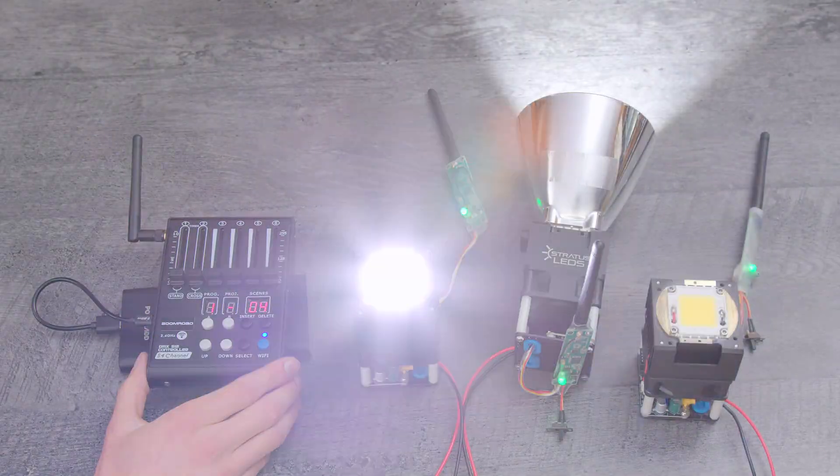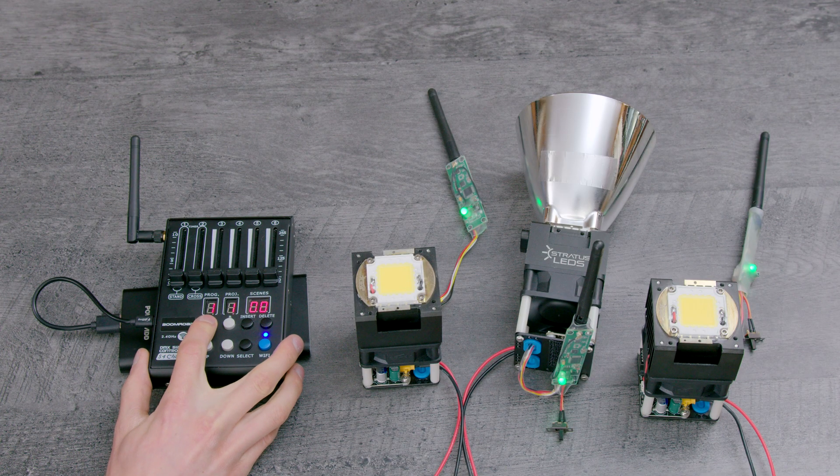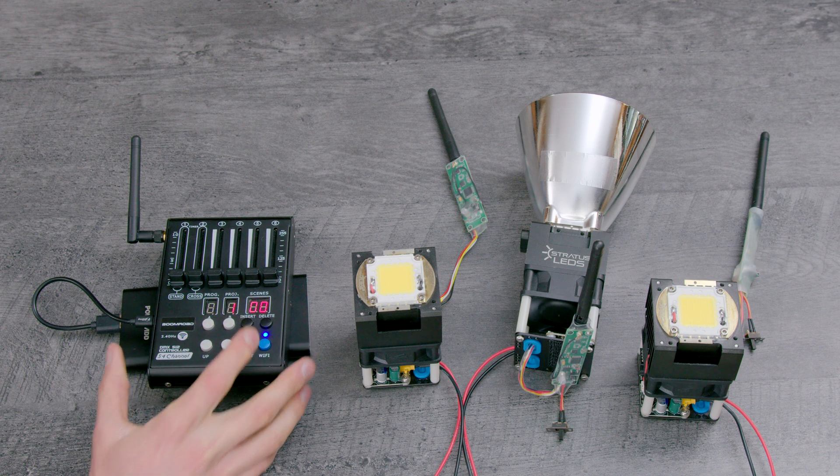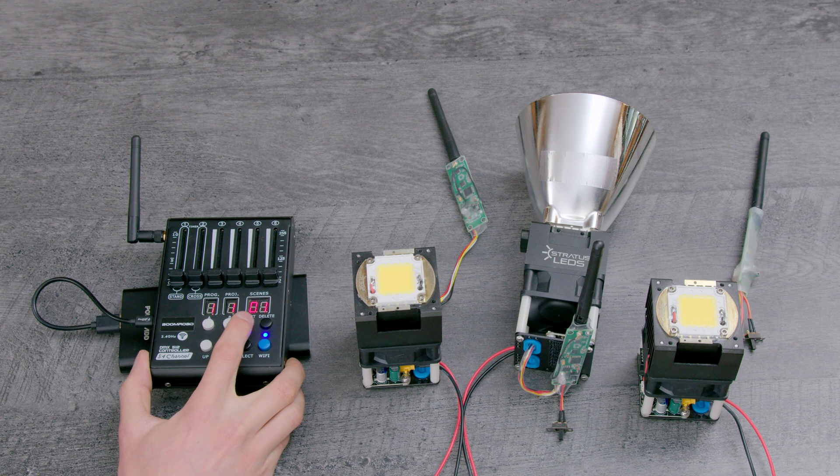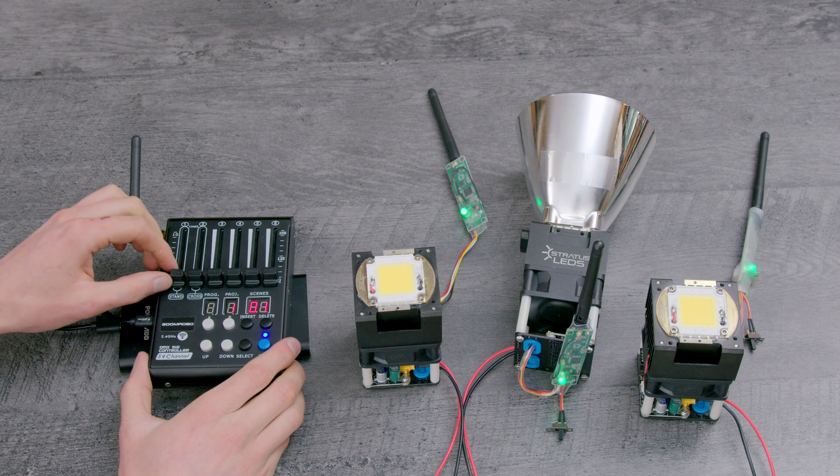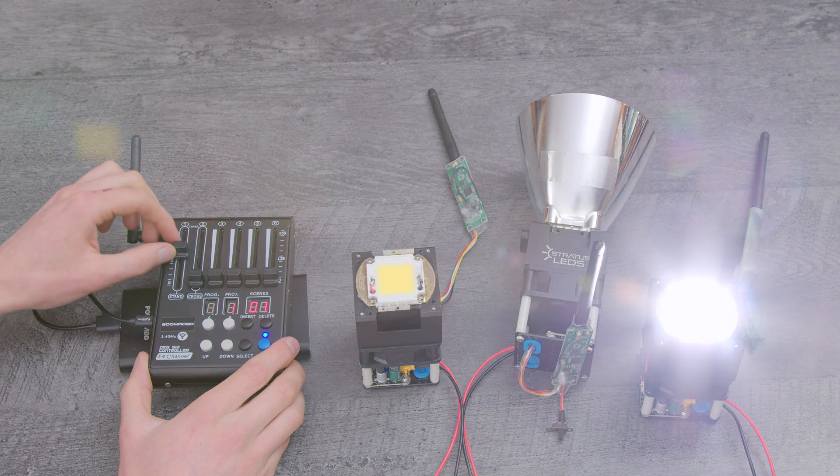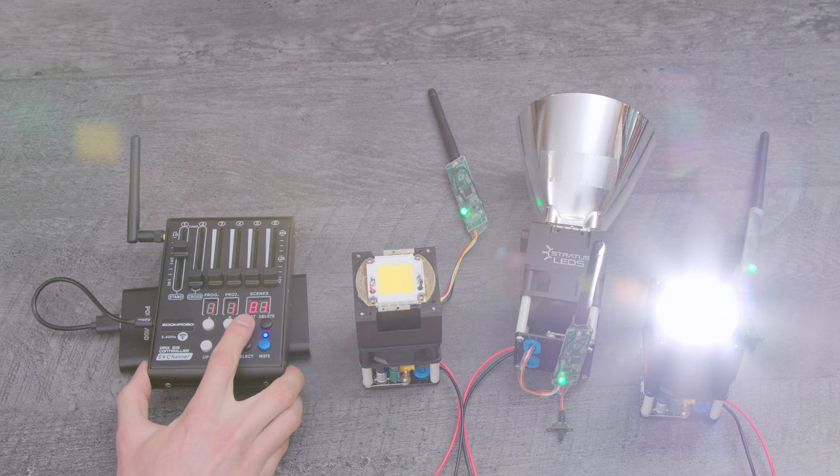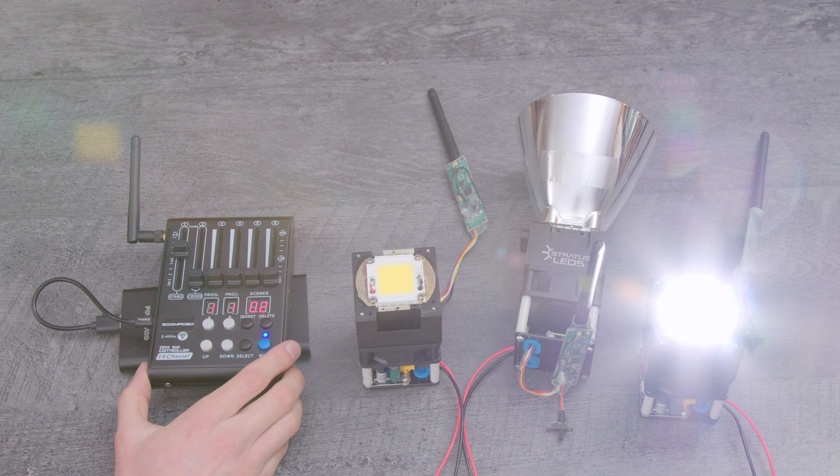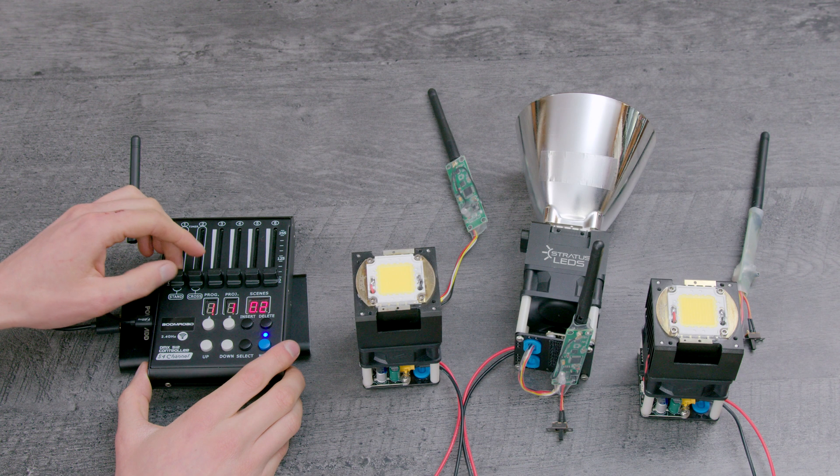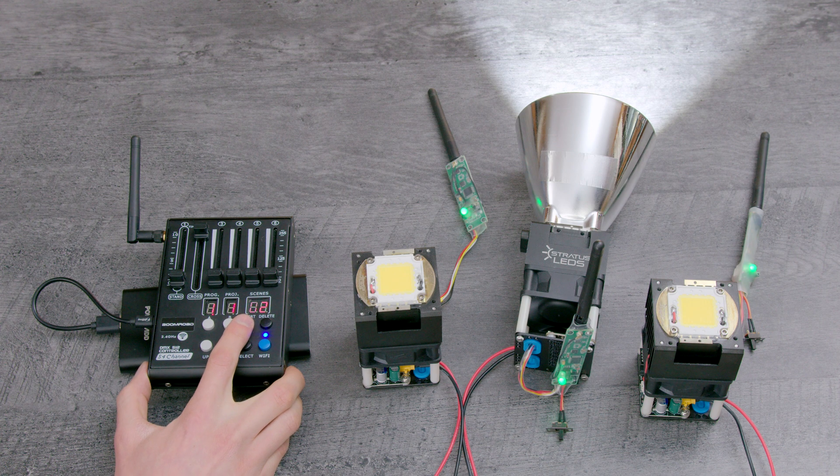To set up a simple DMX scene, press button A for 3 seconds to enter programming mode. Make sure Program and Project are both set to 1. Then adjust the sliders to the desired position and press Insert. This will save the channel positions and increment the scene to 2. You can then adjust the sliders to new positions and repeat.